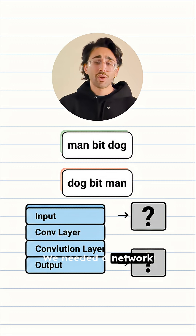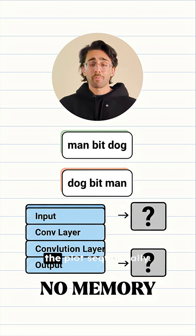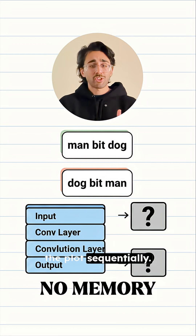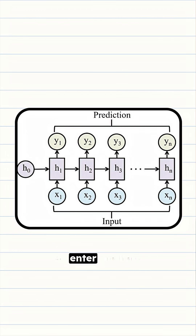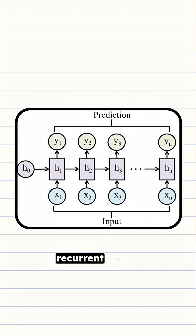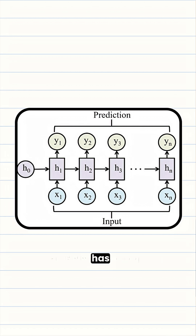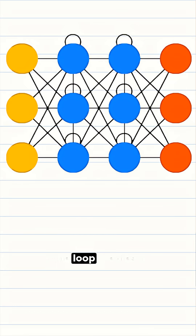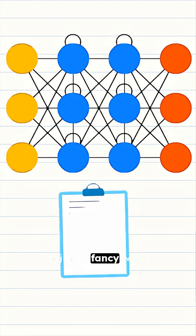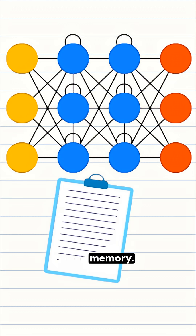We needed a network that could remember the plot sequentially. So enter the hero of this story, the Recurrent Neural Network, or RNN. This idea is brilliantly simple. An RNN has a loop, and that loop creates a hidden state, which is just a fancy word for memory.